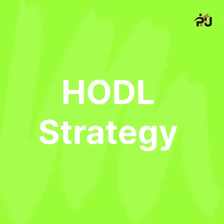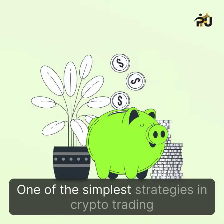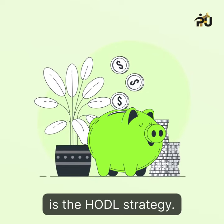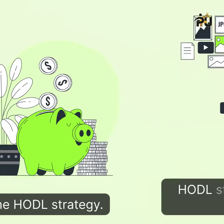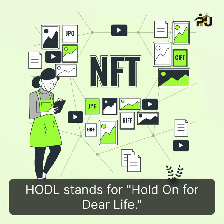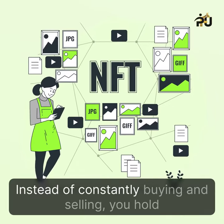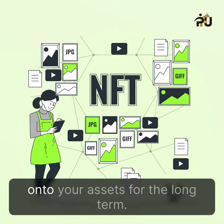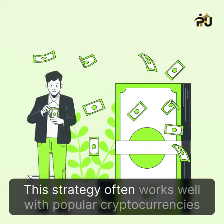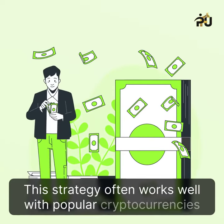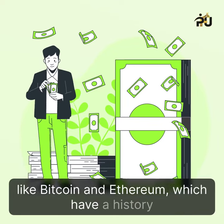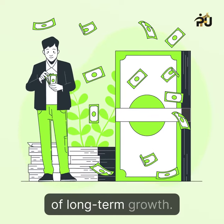One of the simplest strategies in crypto trading is the HODL strategy. HODL stands for Hold On For Dear Life. Instead of constantly buying and selling, you hold onto your assets for the long term. This strategy often works well with popular cryptocurrencies like Bitcoin and Ethereum, which have a history of long-term growth.